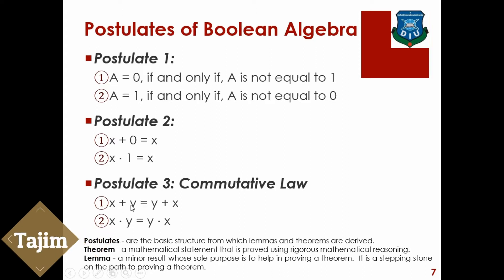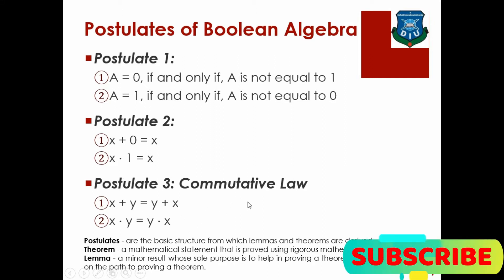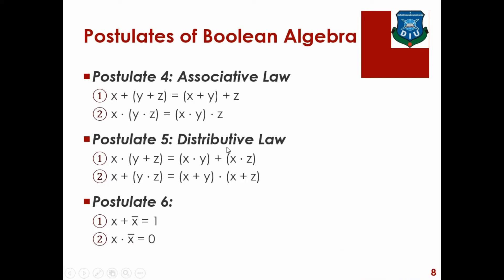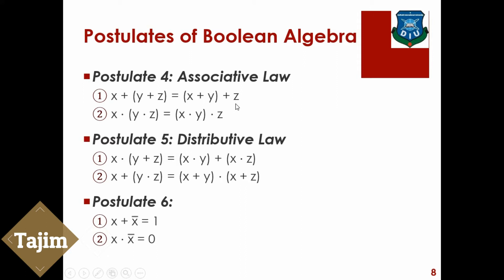The value of x plus y is the same as y plus x. Similarly, x multiplied by y is the same as y multiplied by x. This is the commutative law of Boolean algebra.